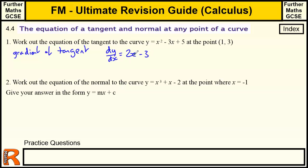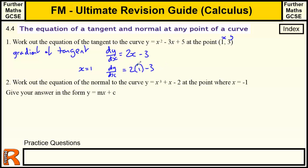This will tell us the gradient of any tangent to the curve. We want the tangent where x equals 1 and y equals 3. The y equals 3 will be useful in a minute. So dy by dx when x equals 1: dy by dx equals 2 lots of 1 minus 3. 2 lots of 1 is 2, take away 3 is minus 1. So our gradient is minus 1.